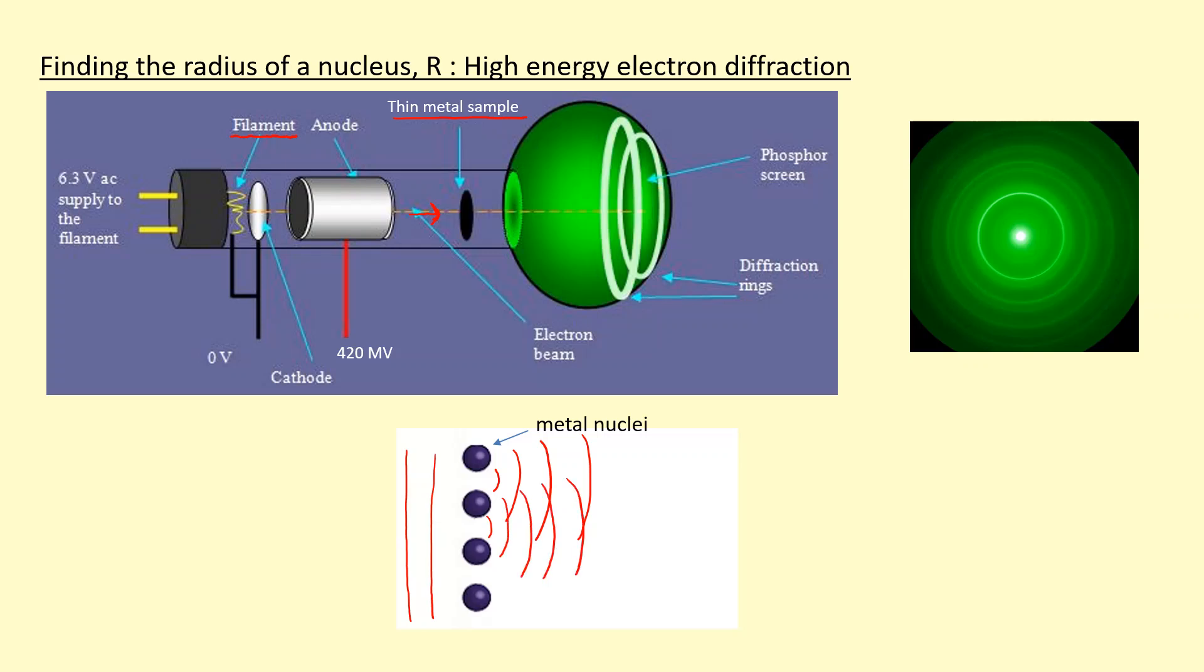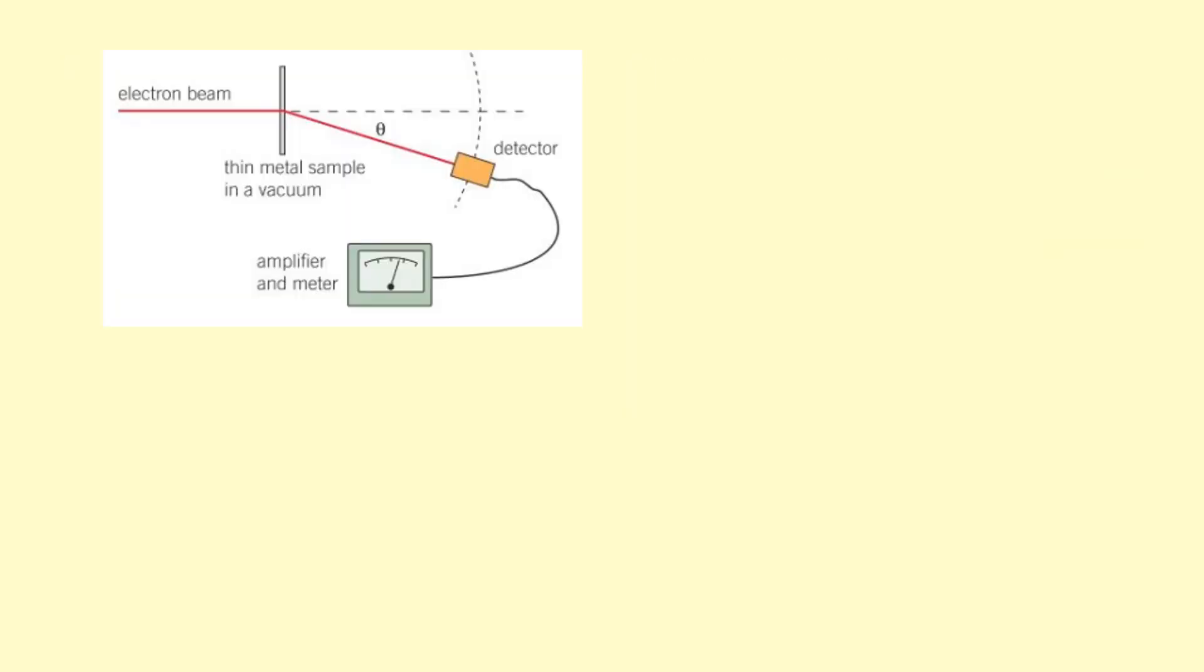And then it's going to superpose with itself and form the pattern on the screen. Okay, so we've got the exact same setup over here. We've got the electron beam going through a thin sample and forming a diffraction pattern. Then instead of a phosphorus screen, I've got a detector which I'm going to move at different angles.